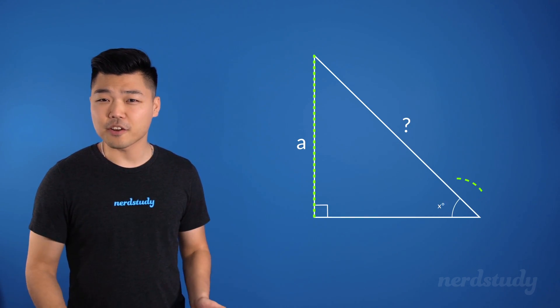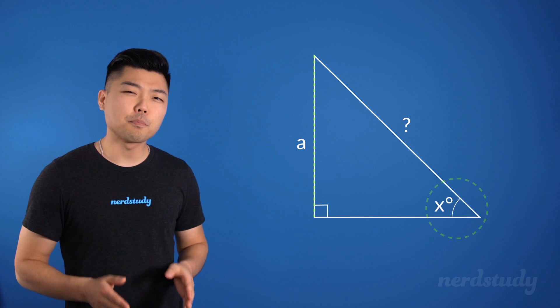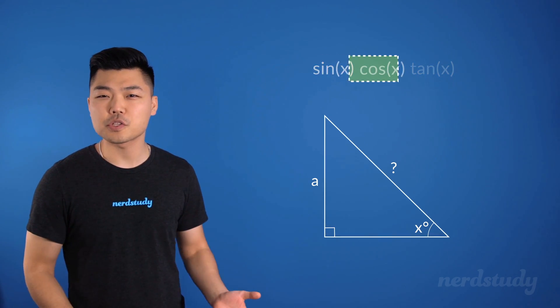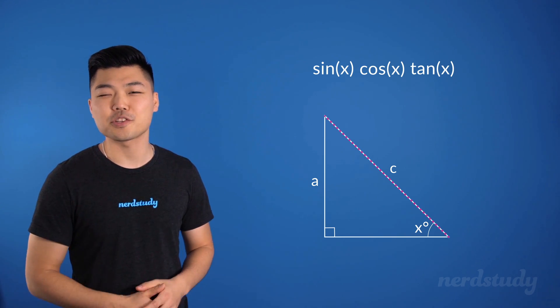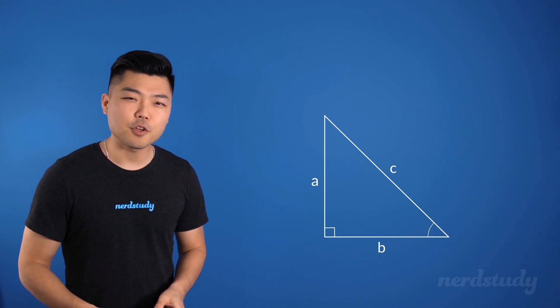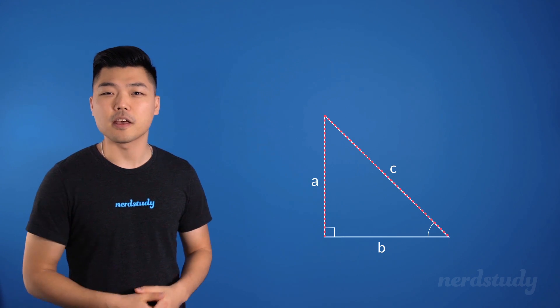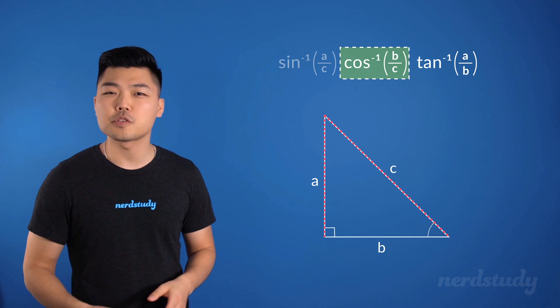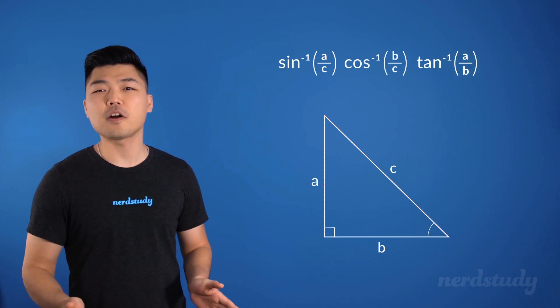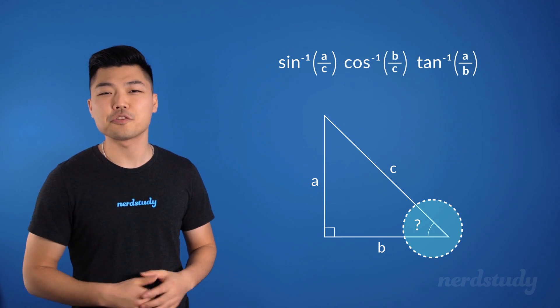So let's go over a quick recap of what we just learned. If we're provided with a side length and an angle, then we can choose the appropriate functions between sine, cosine, and tangent to find the other side length in question. But instead, if we are provided with two side lengths, then we can use the inverse of sine, cosine, and tangent in order to find the appropriate angle that we're interested in.